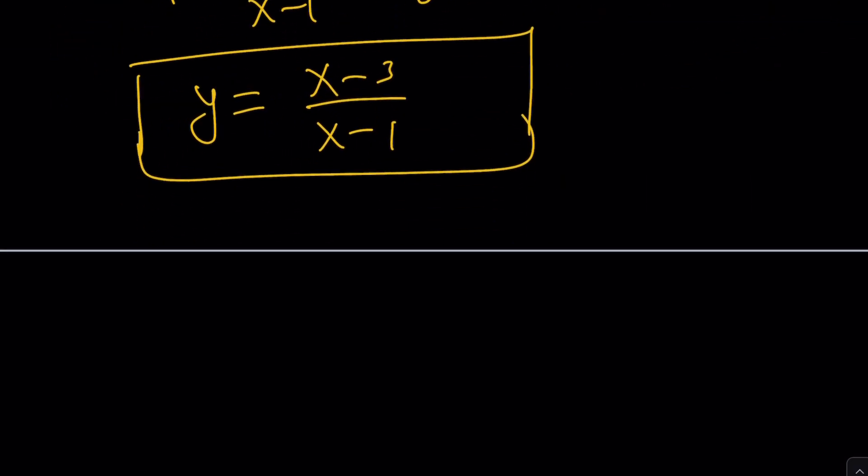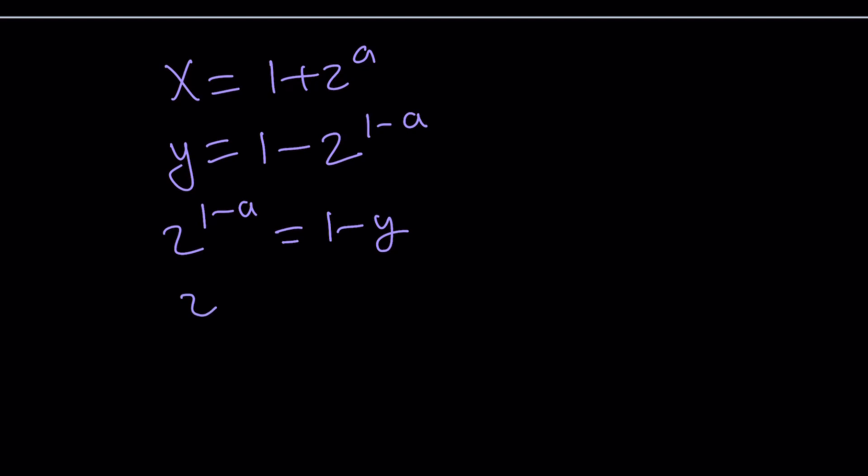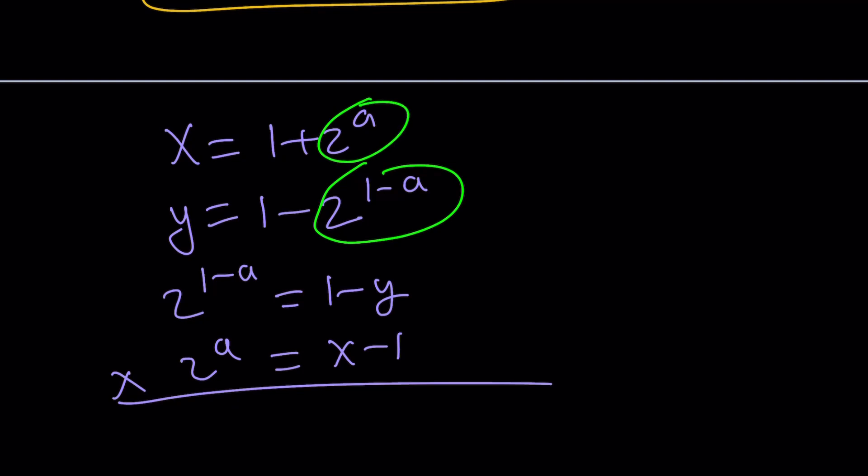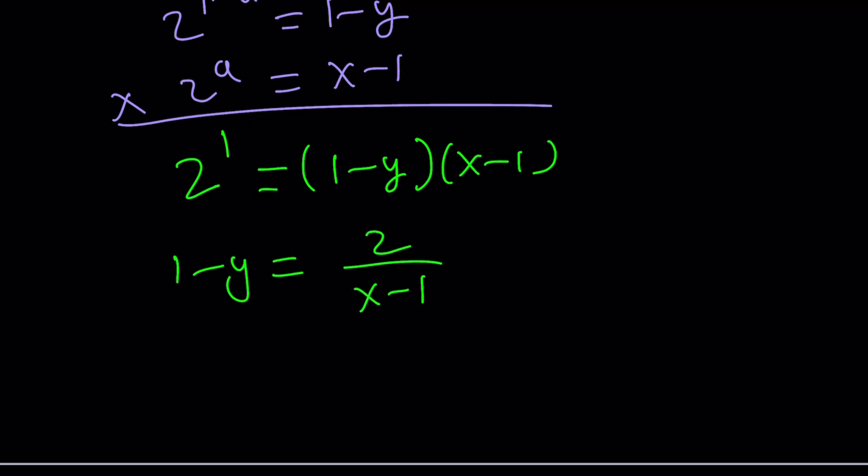Is there another way to approach it? Let's take a look. We can also do the following. We can isolate, kind of switch this around. Put the 2 to the power of 1 minus a on this side. And then isolate the 2 to the a on this side. And then multiply these together. It's pretty much the same thing, but it's kind of faster. So basically, you're trying to isolate the exponential pieces and then multiplying them together. Because when you multiply, you're going to add the exponents. So a is going to cancel out. You're going to end up with 2 to the power of 1, which equals 1 minus y times x minus 1. And then divide by x minus 1. And you're going to get the answer pretty much. And then we can add y to both sides. Or we can also subtract 1 from both sides. And then multiply both sides by negative 1. So that's going to give you negative 2 over x minus 1 plus 1. And then make a common denominator. You'll get the exact same thing. Make sense? So basically, we are able to express y in terms of x.